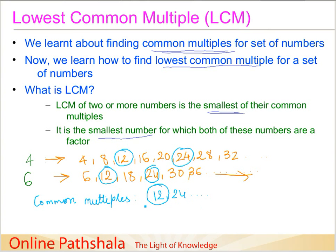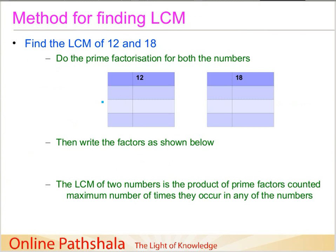If we ask what is the lowest among these common multiples, the answer is 12. This is what we mean by the Lowest Common Multiple. This also confirms the other definition: 12 is the smallest number for which both 4 and 6 are a factor — both 4 and 6 are factors of 12. Now let us try and find a more formal method for finding the LCM. We will actually be learning two ways. The first method, which we just used, is a very basic one. The next is a bit more formal and better.